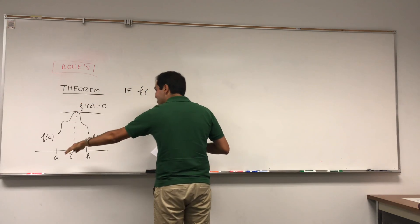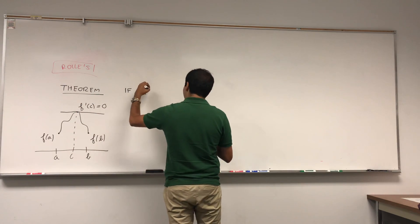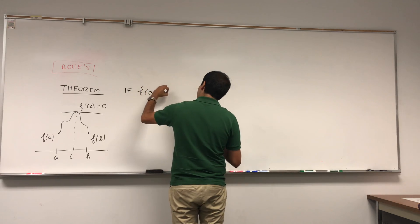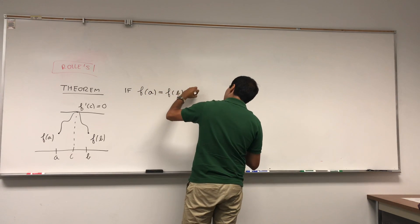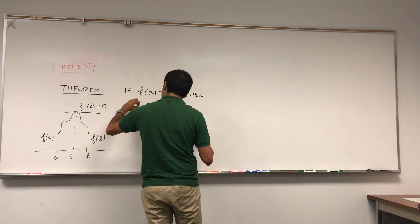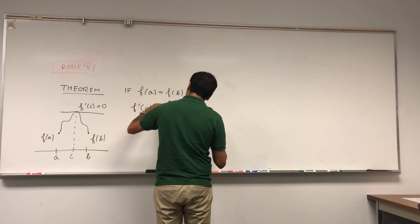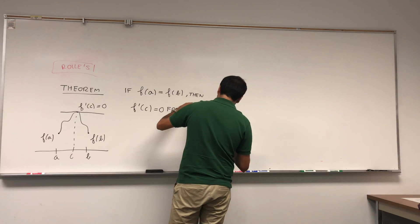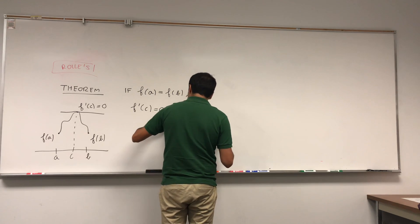If you have a continuous function on [a, b] that's differentiable on the inside, and f(a) equals f(b), then f prime of c equals zero for some c in (a, b).